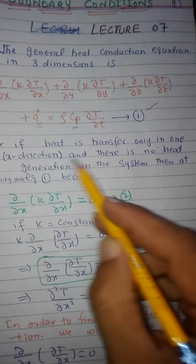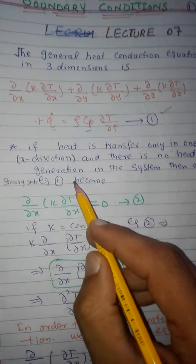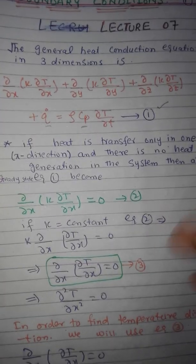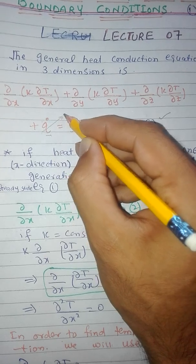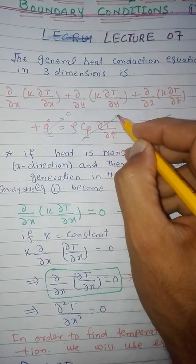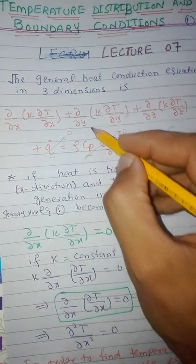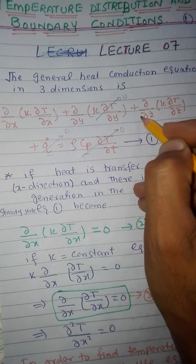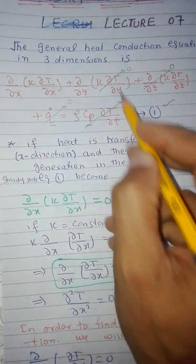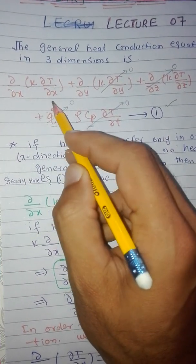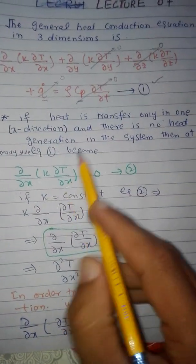If heat is transferred only in the x direction and there is no heat generation in the system, then at steady state the heat generation term becomes zero and the heat storage term also becomes zero. Since there is no heat transfer in the y or z directions, those terms also become zero. Simplifying, we are left with only one term.